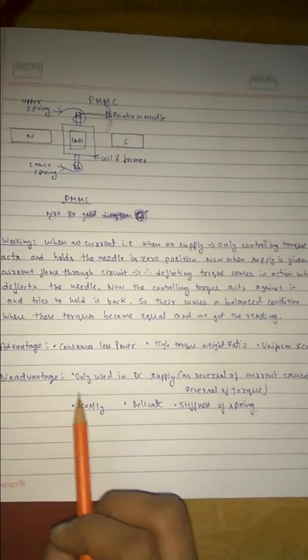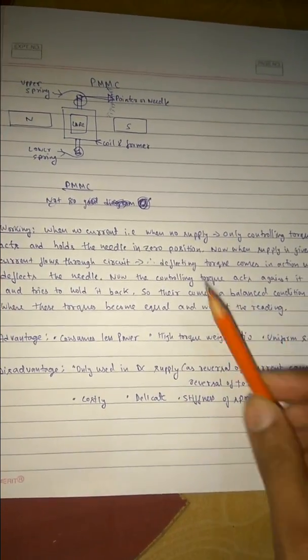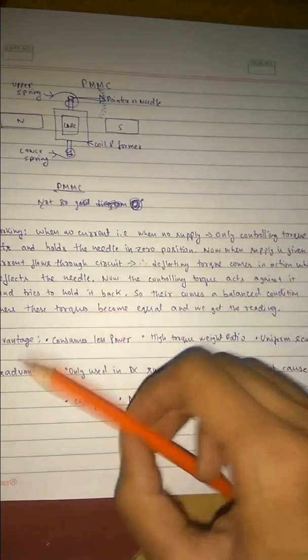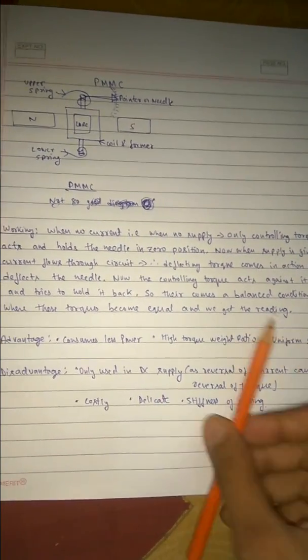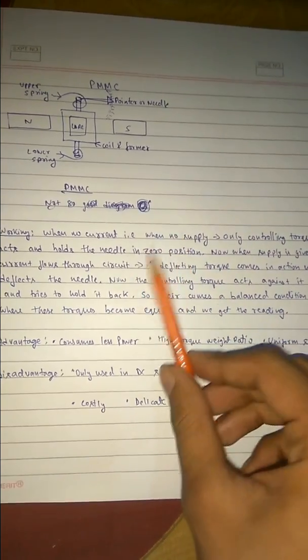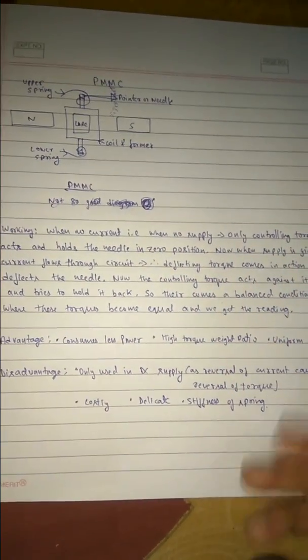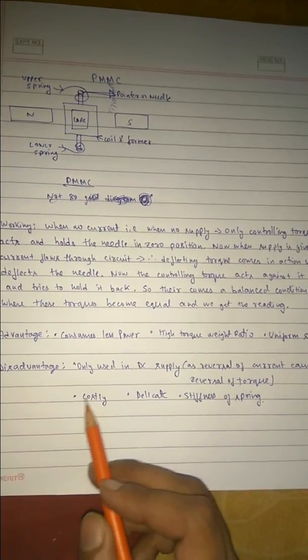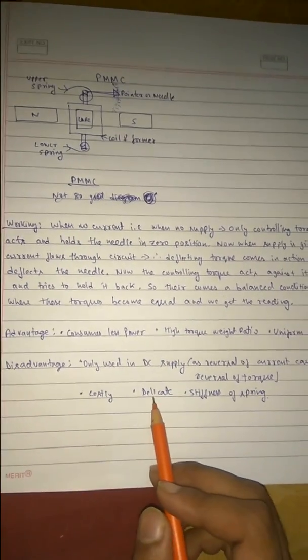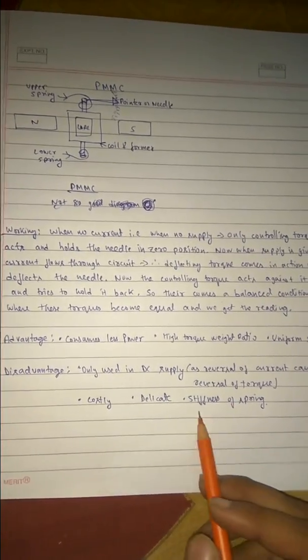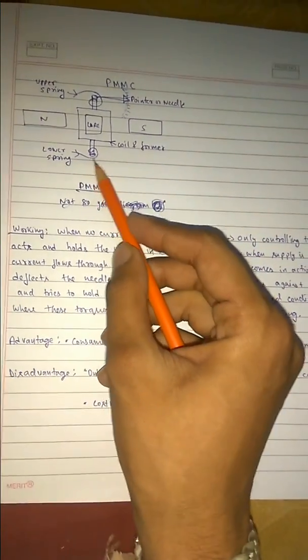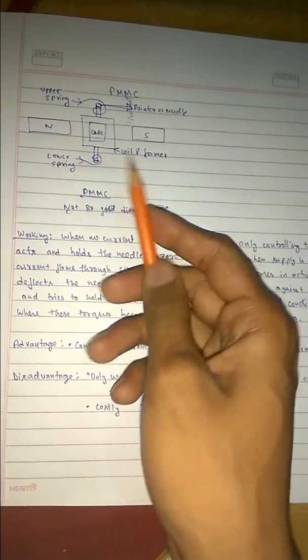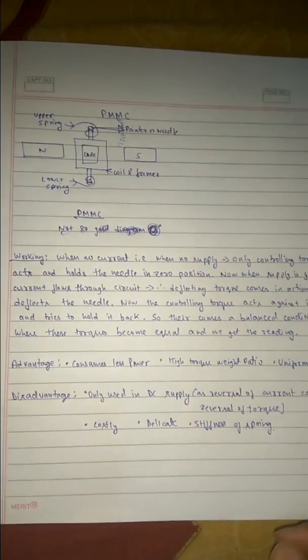Disadvantage of PMMC: it is only used in DC supply. Why not AC? Because in AC the current reverses, and in DC there is no reversal. If current reverses, the torque will reverse — that is the reason only DC is used. Another disadvantage is it is costly, delicate, gets damaged easily, and the stiffness of the spring increases with time.